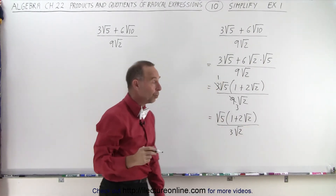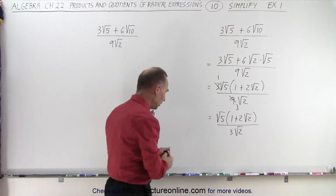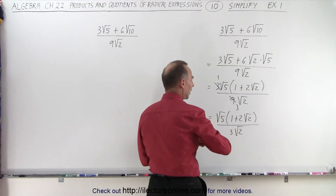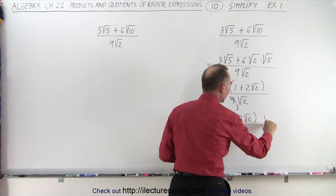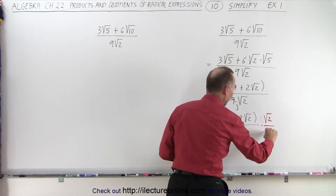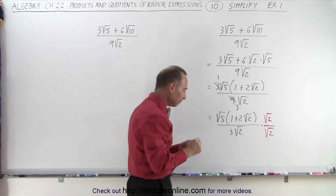Now we'll rationalize the denominator, which means we multiply both the numerator and denominator by the square root of 2 over the square root of 2, just like that.